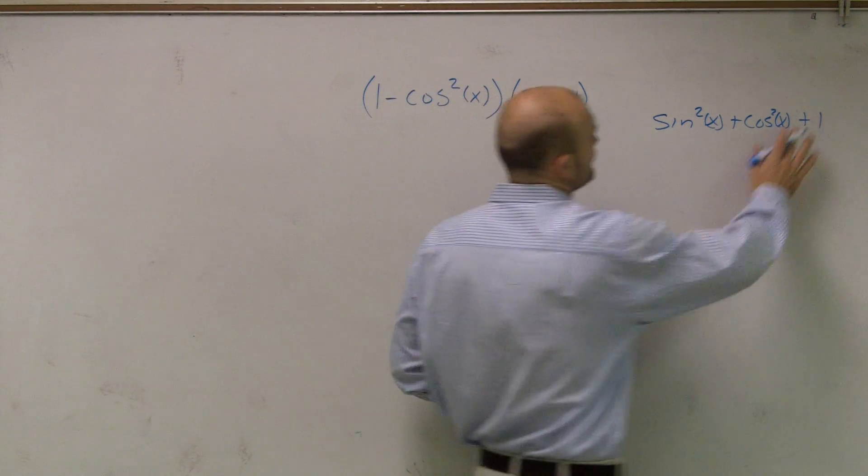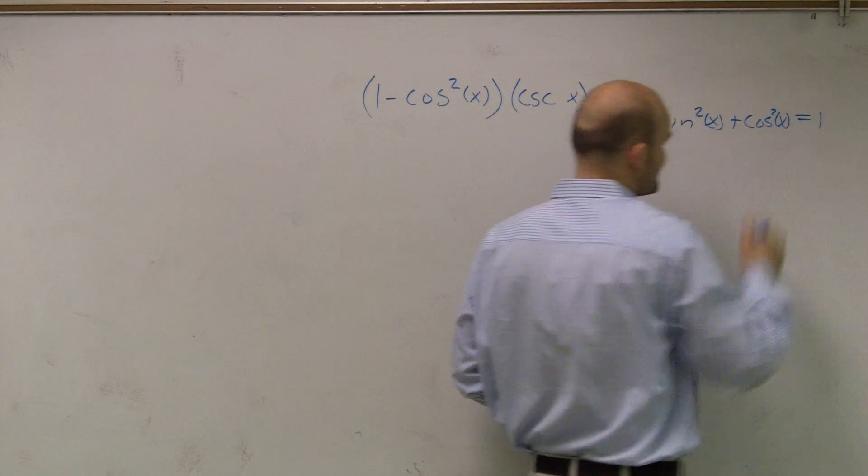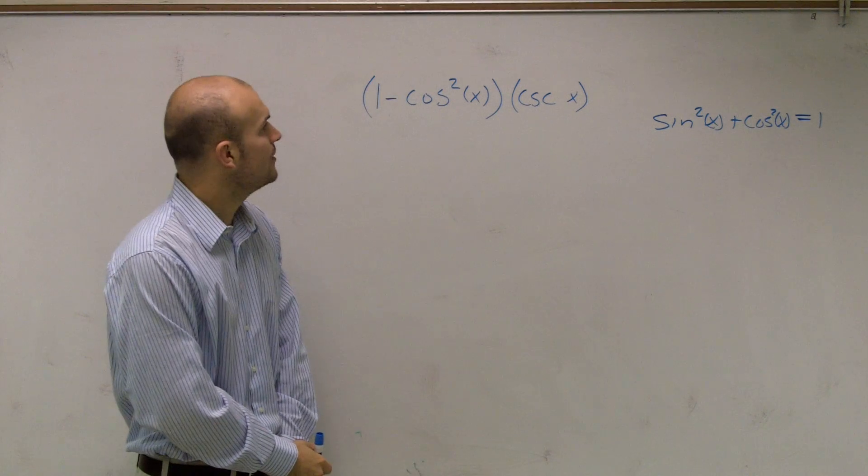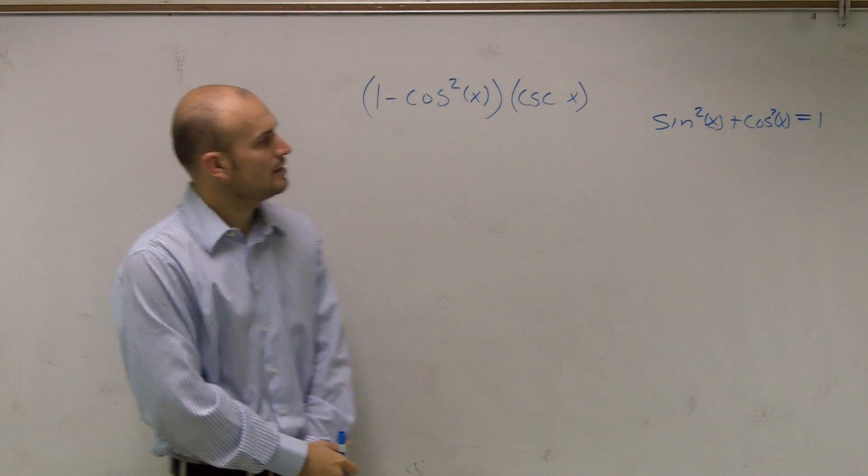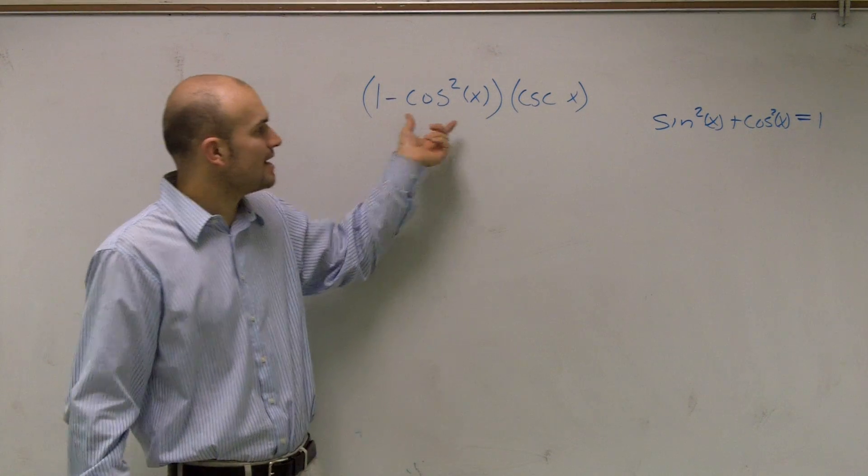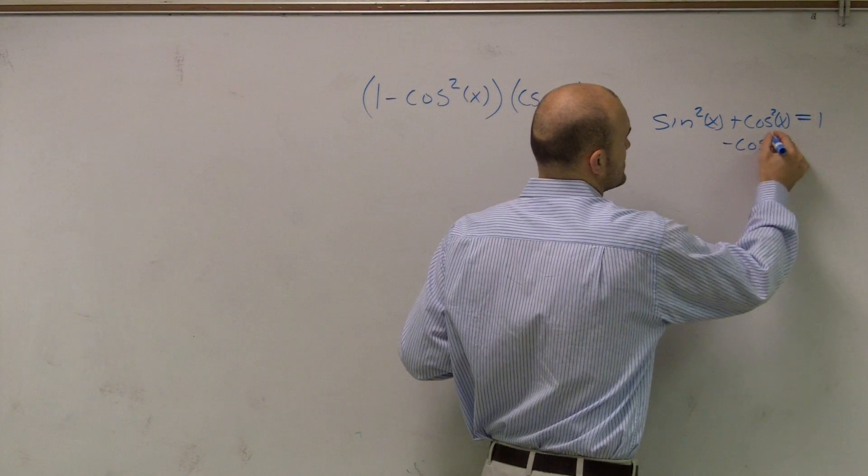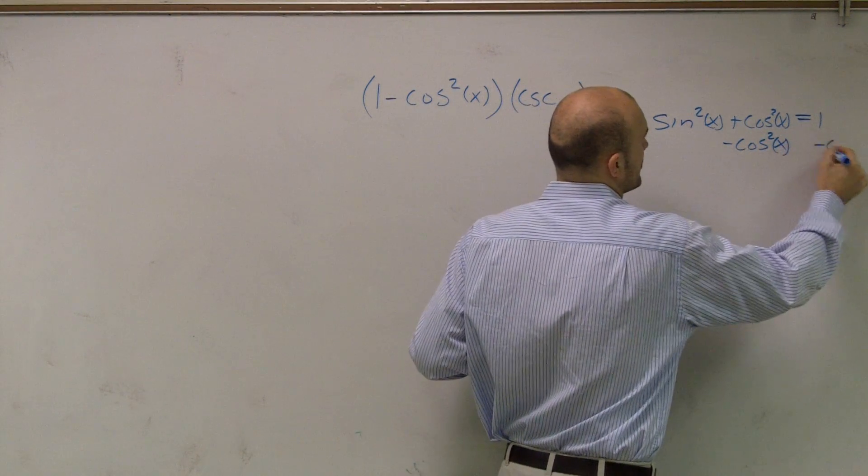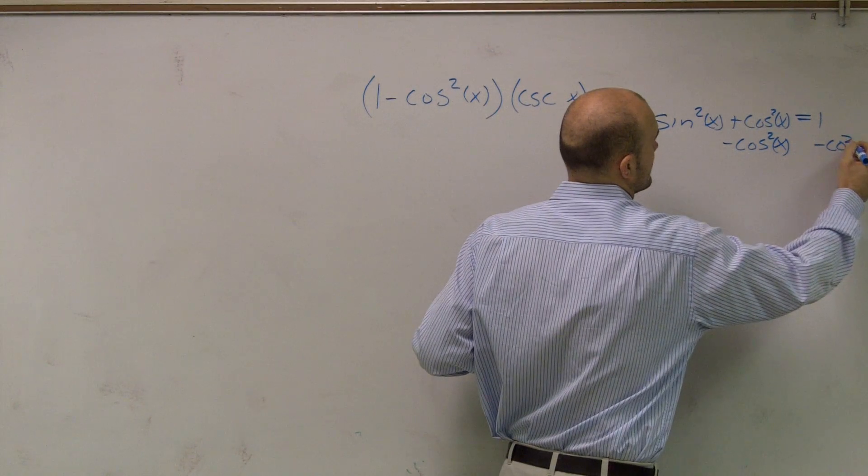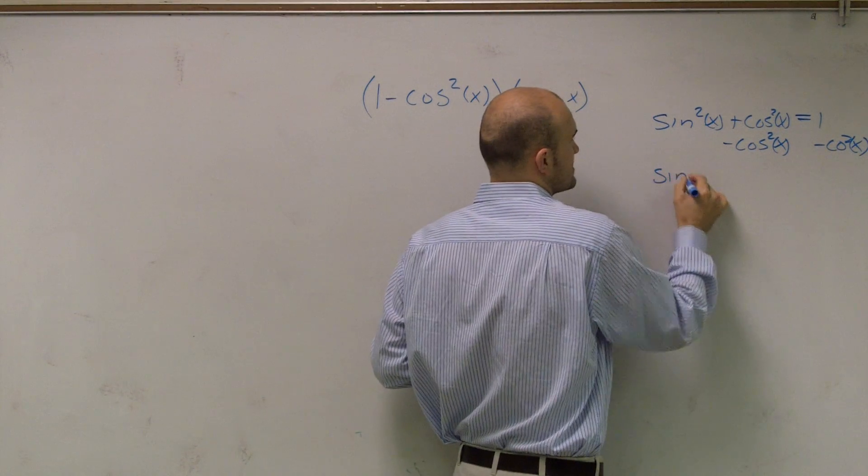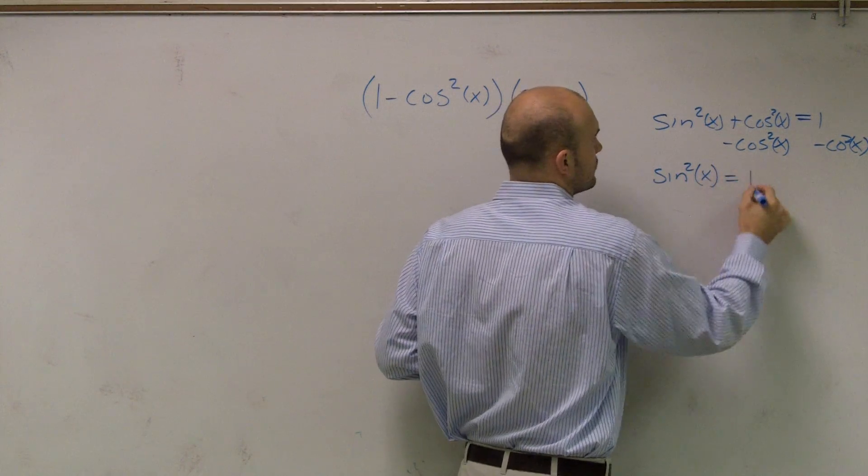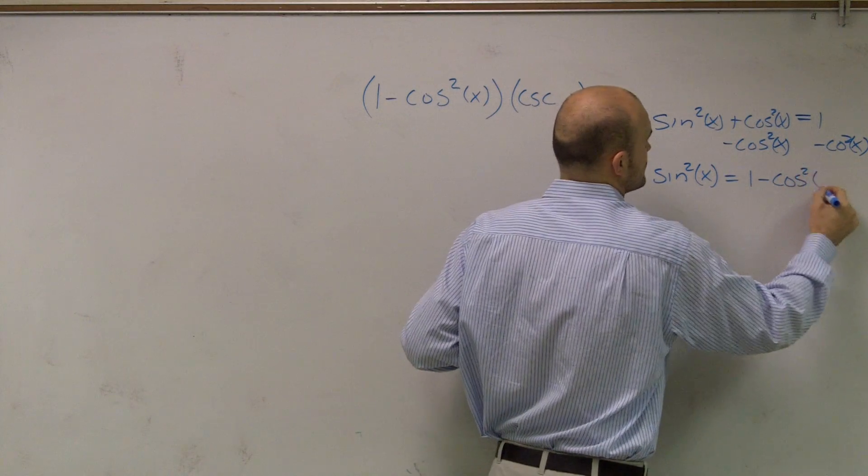Now, I need equals 1. So now, what I'm trying to say is, how can I rewrite that so it looks like 1 minus cosine squared? Well, if I subtract a cosine squared of x on both sides, what I get is sine squared of x equals 1 minus cosine squared of x.